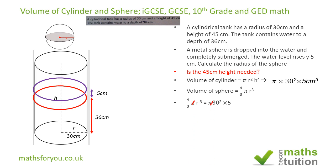If we then multiply both sides by 3/4, the 4/3 on the left hand side disappears, and we end up with R cubed equals 3/4 times 30 squared times 5, which gives us a figure of 3375.